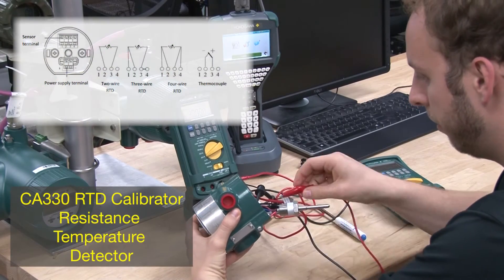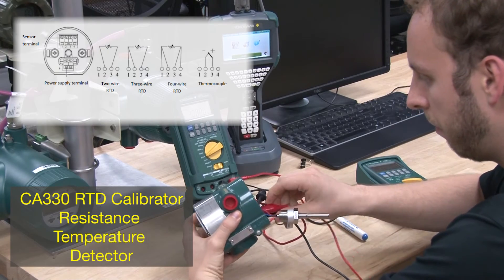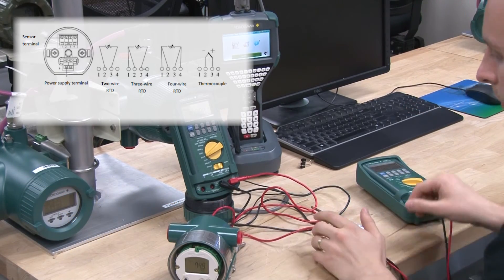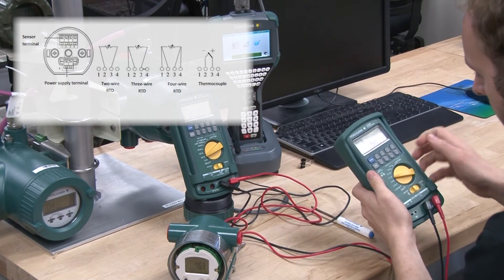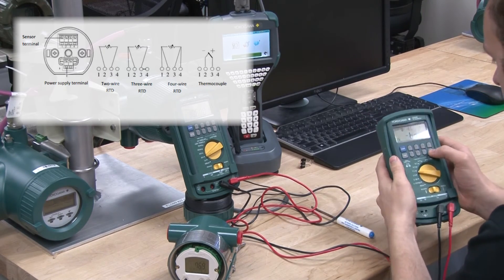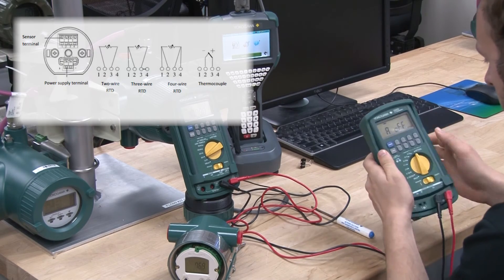The CA330 RTD calibrator or resistance temperature detector will correspond to 14 types of RTD standard for sourcing. It accepts two, three, and four wire and realizes RTD signalization.